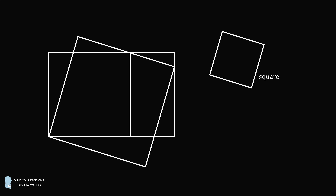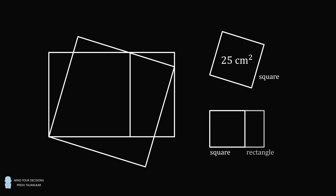Problem 2. There is a square and a rectangle that are placed side by side. Then, a square is tilted as follows: its lower left corner is coincident with the square on its lower left corner, its upper right corner is along the right side of the rectangle, and the upper side goes through the intersection point of the square and the rectangle. If this square has an area equal to 25 square centimeters, what is the combined area of the square and the rectangle?